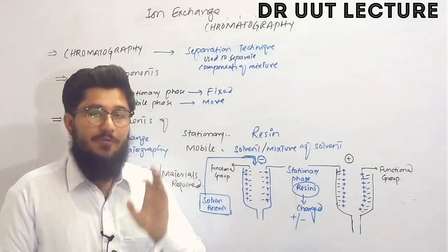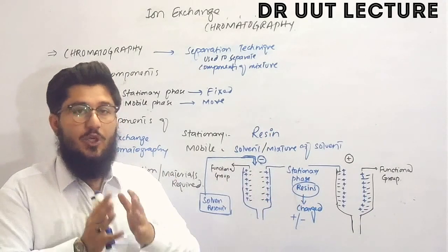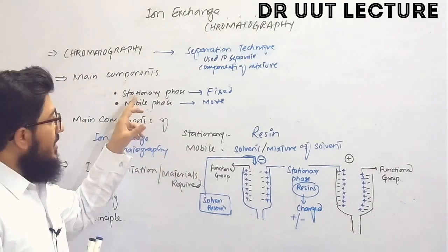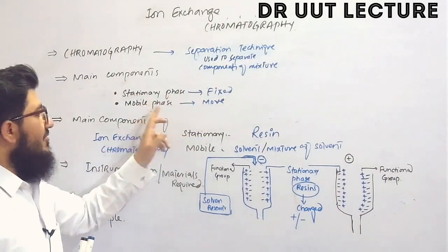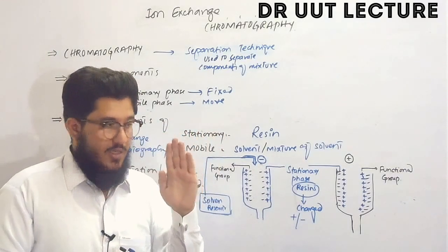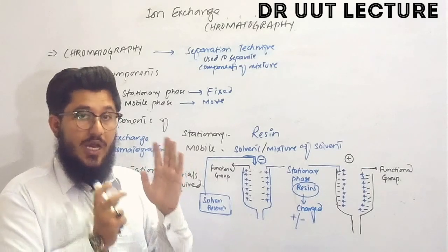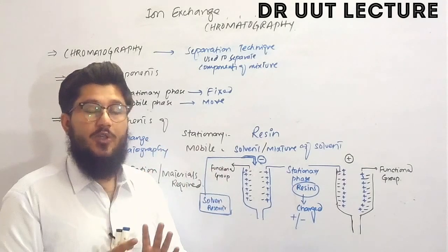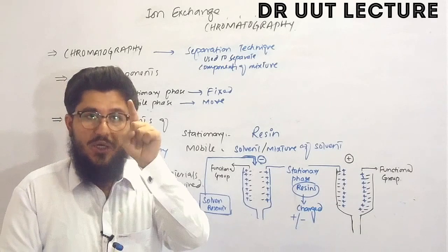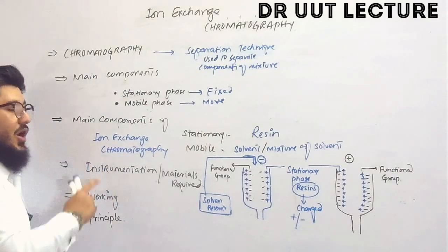Now let's look at the main components of any type of chromatography. We have two very important components that are common in all types: the stationary phase and the mobile phase. The stationary phase is the fixed phase and the mobile phase is the movable phase. These two phases are required in each and every type of chromatography and are responsible for the separation of the mixture into components.